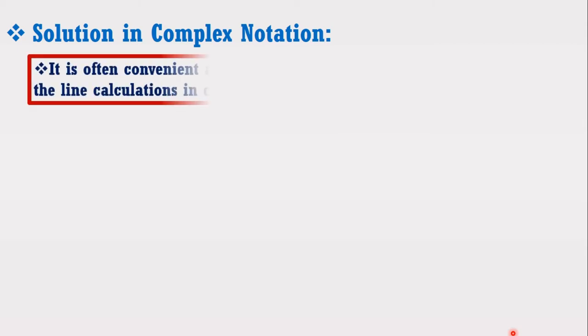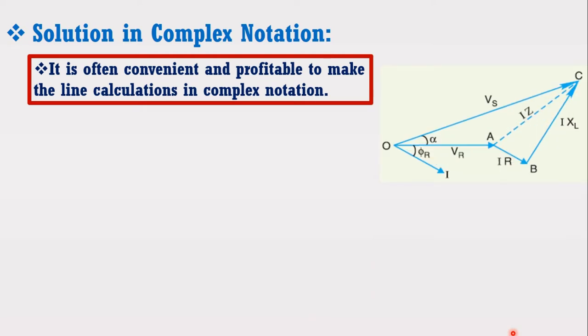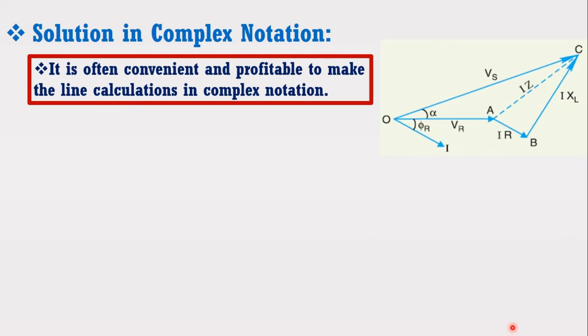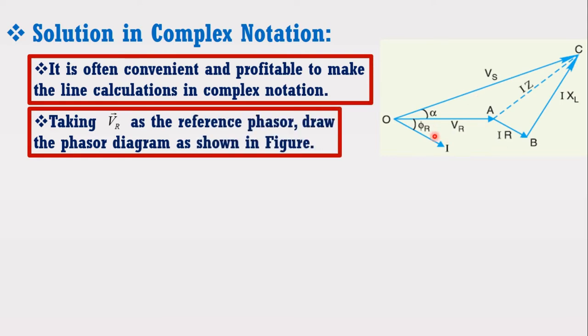Now, I am going to discuss how short transmission line can be represented through complex notation. It is often convenient and profitable to make the line calculation in complex notation. Taking Vr as the reference phasor, draw the phasor diagram as shown in the figure. It is clear that Vs is the phasor sum of Vr and Iz.